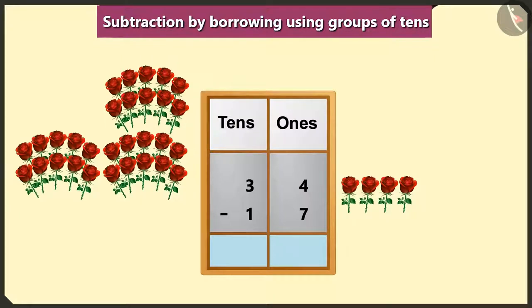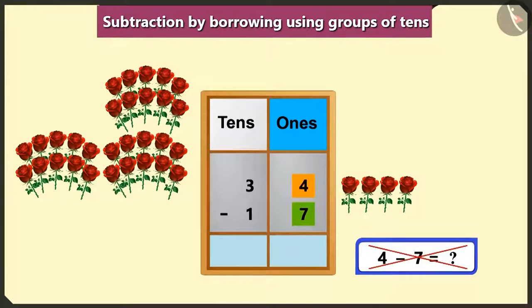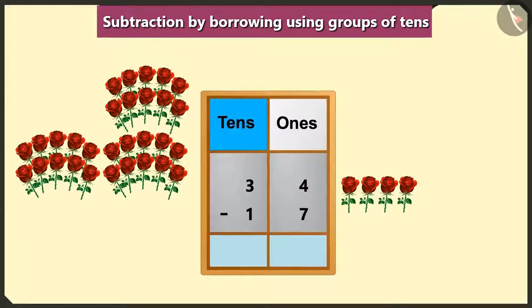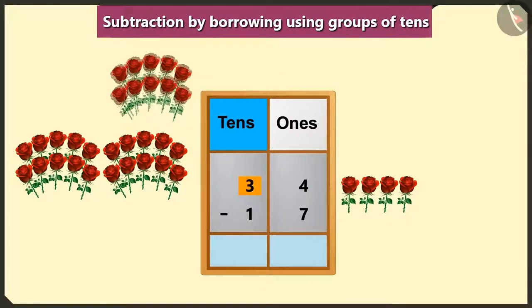Hmm, but here we cannot subtract 7 from 4 in the box of ones. Yes, so we will borrow 1 ten from 3 tens in the box of tens.